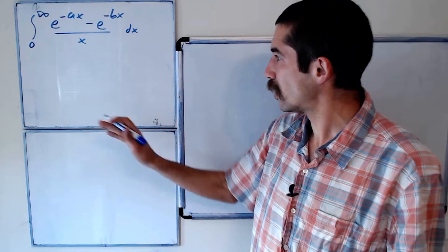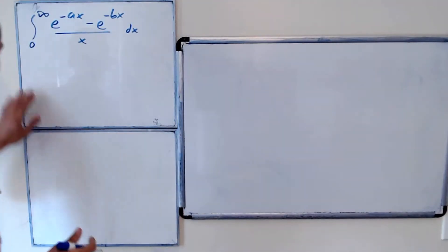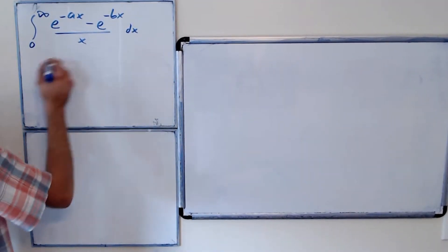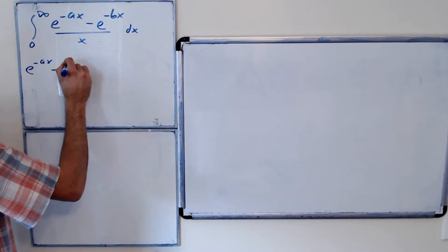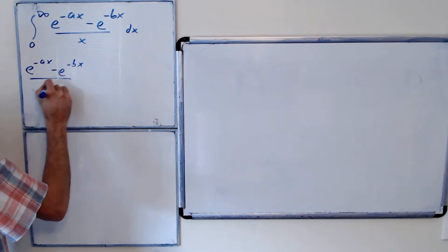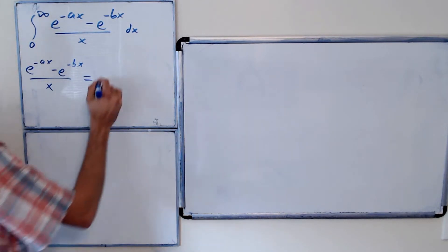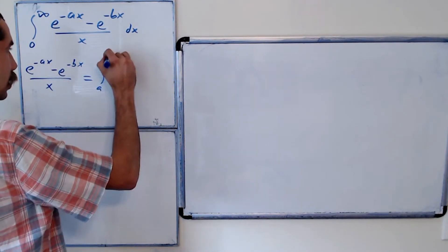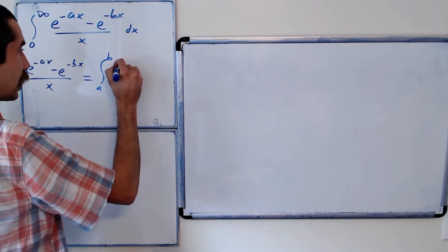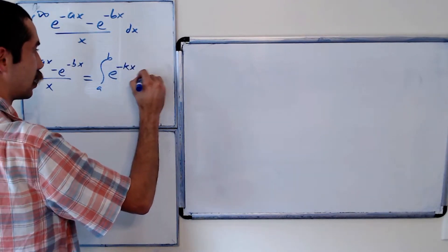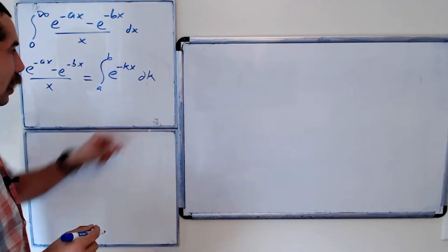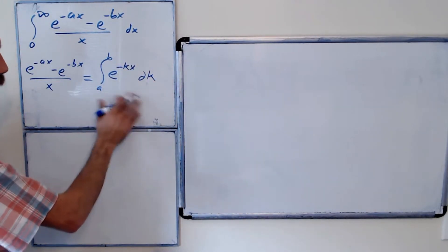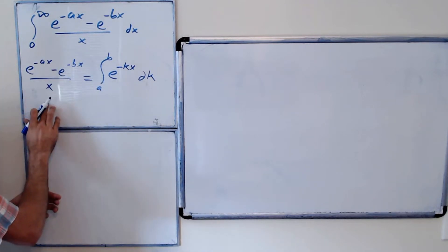Okay, so the first thing I did was I noticed that the inside here, e to the negative ax minus e to the negative bx all over x, could be expressed as the integral from a to b of e to the negative kx dk. So k is—I'm introducing a new variable here, k—and you can evaluate this integral on your own and verify that it's equal to this.